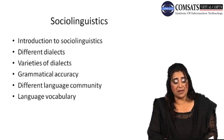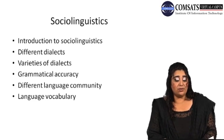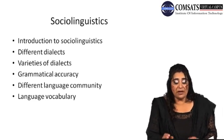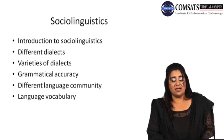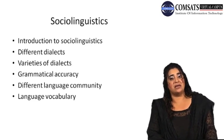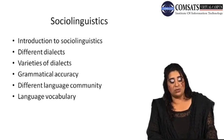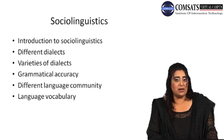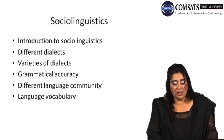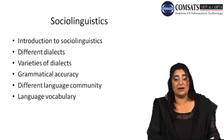Two dialects may be comprehensible if they are neighboring isoglosses, but if the distance is greater, the two dialects may not be comprehensible. If they are closer in distance, then it is very easy to understand and both languages are very similar even though the dialects might be different. But sometimes two dialects could be of neighboring isoglosses, and if the distance is greater, the two dialects may not be comprehensible — you can't understand them clearly.